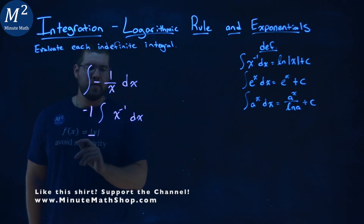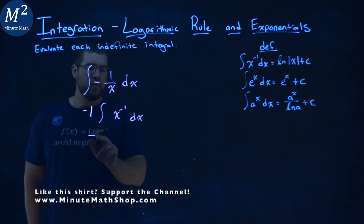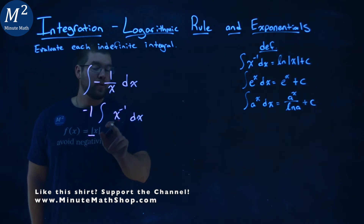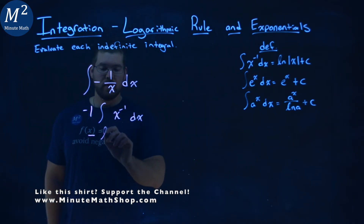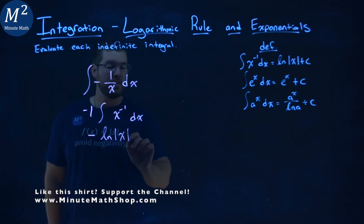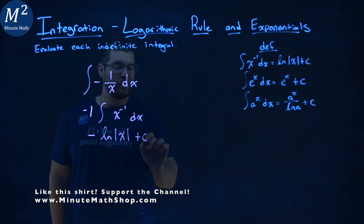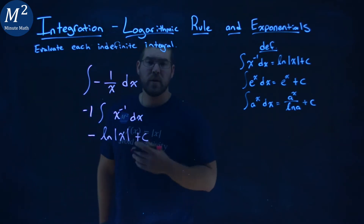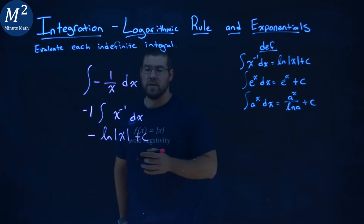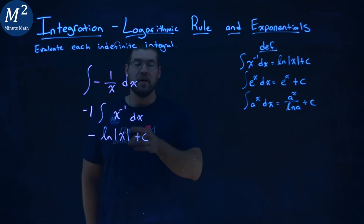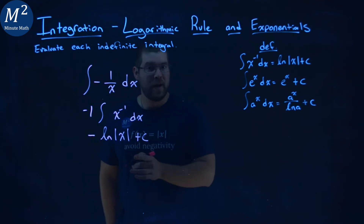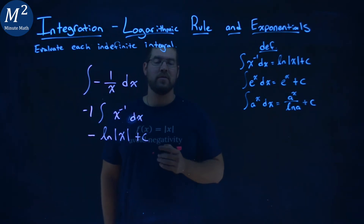The negative stays on the outside. Then the integral part becomes the natural log of the absolute value of x, then plus c. So our final answer here is the negative natural log of the absolute value of x plus c.